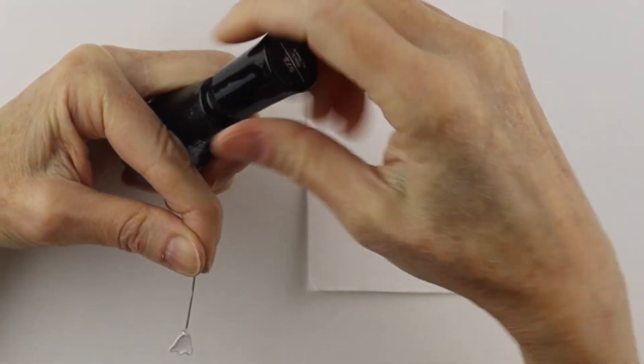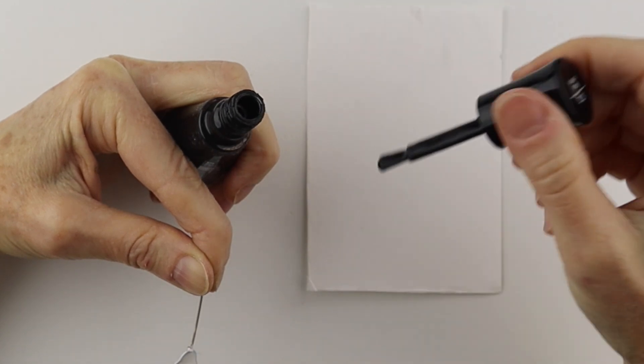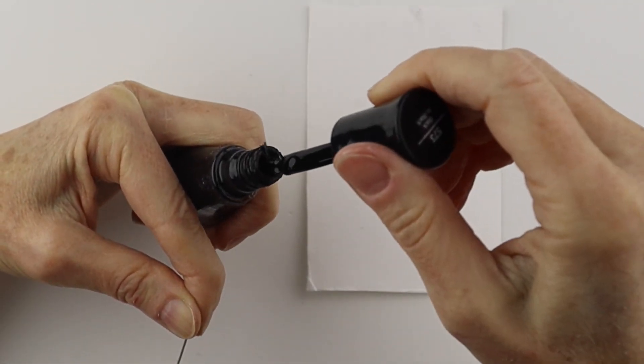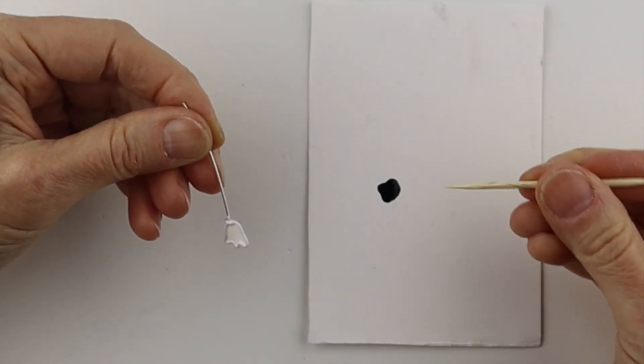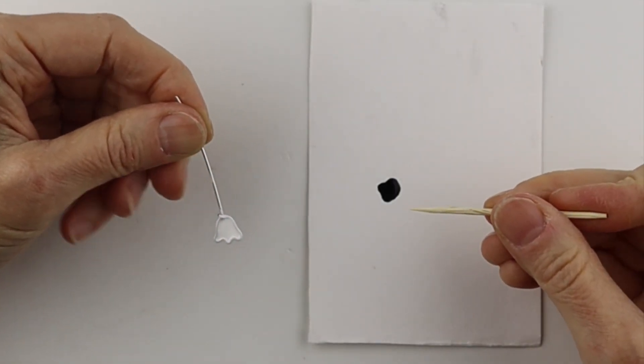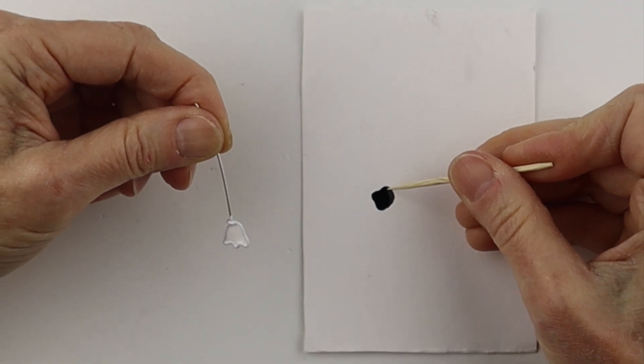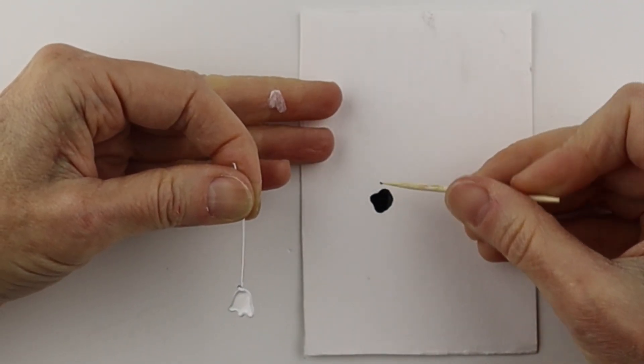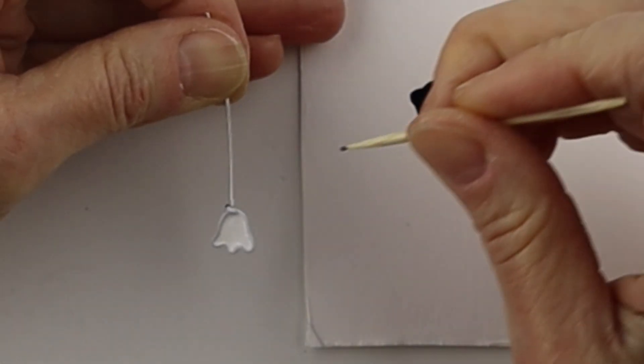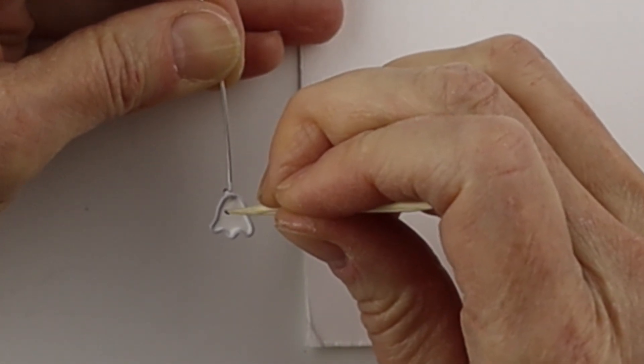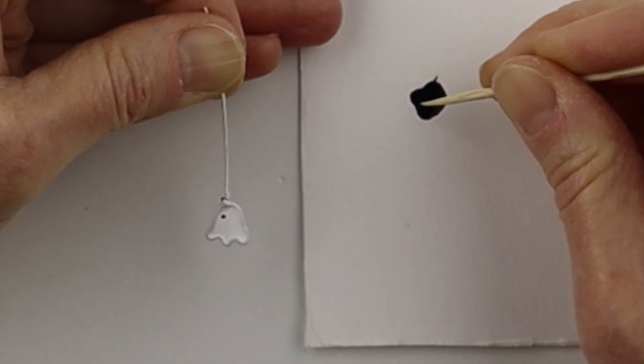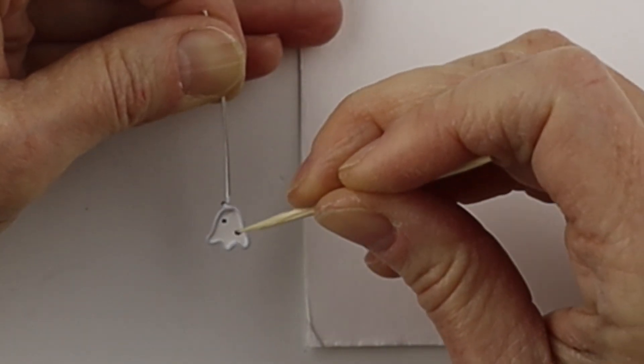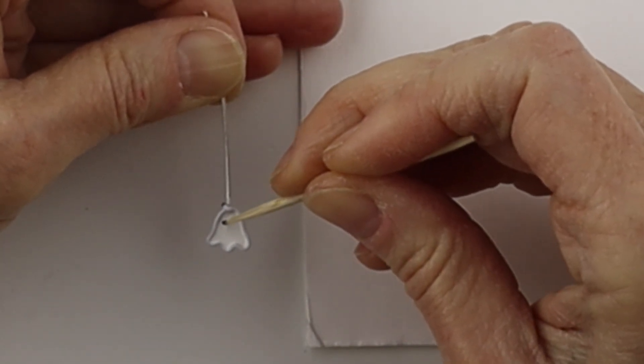So to make eyes on your ghost just put a little bit of nail polish on a piece of paper or plastic. And then just take the end of a toothpick. Pick up a little bit of the nail polish and very gently dab on an eye. Take a little bit more if you want it bigger.